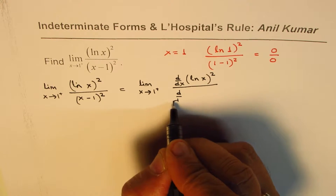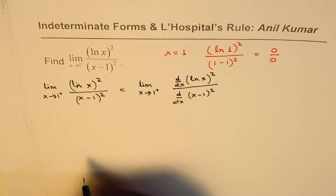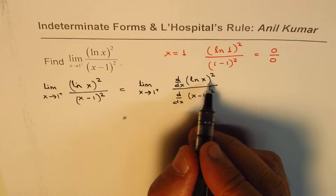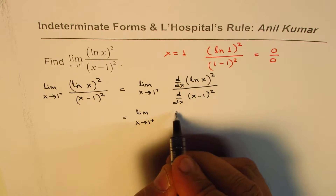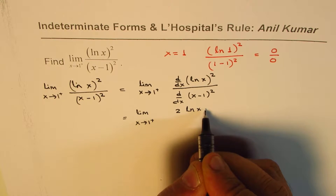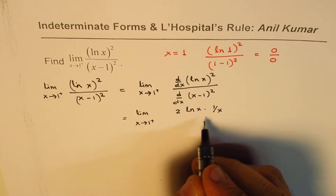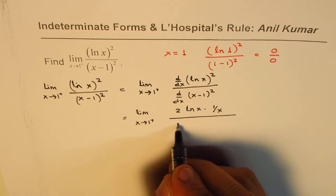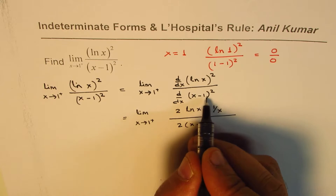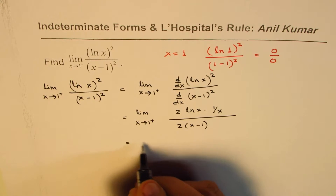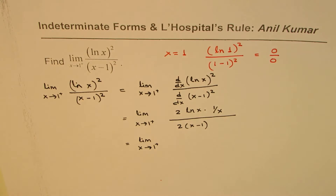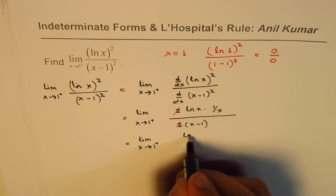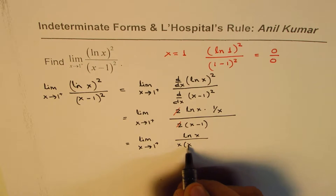The derivative of (ln x)² is 2 ln x times (1/x) by the chain rule. The derivative of the denominator (x−1)² is 2(x−1) times 1. So we get the limit as x approaches 1 from the right of 2 ln x · (1/x) divided by 2(x−1). The 2s cancel, simplifying to ln x divided by x(x−1).